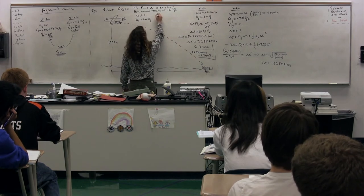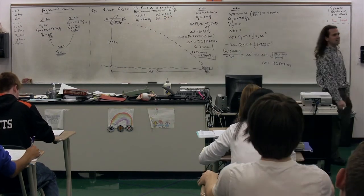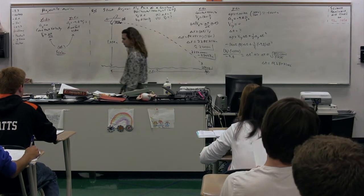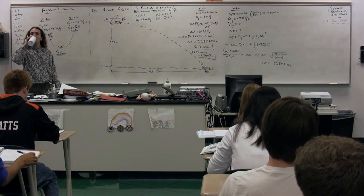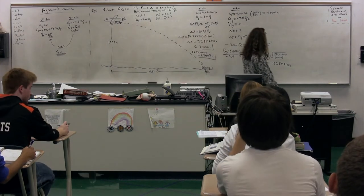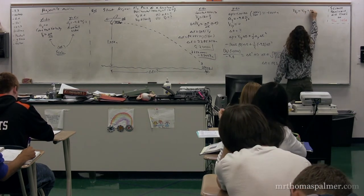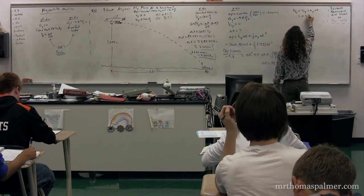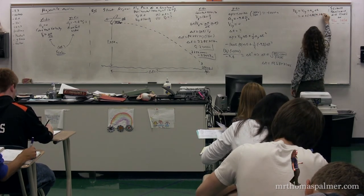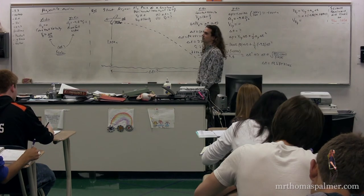Part B: What is Arjun's final velocity right before he slams into the vat of cherry Jell-O? We're looking for the final velocity in the y-direction. The velocity final in the y-direction equals velocity initial in the y-direction plus acceleration in the y-direction times change in time. We know the initial velocity is zero, the acceleration in the y-direction equals negative 9.8, times the change in time of 14.28571.